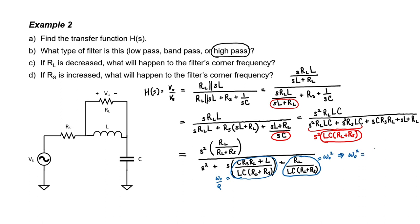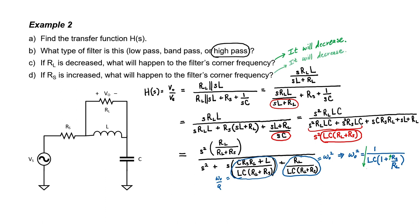Let me rewrite the equation for omega-0 squared by dividing everything by R_L so that R_L appears only once. That way, when we look at question C, if R_L is decreased, the expression R_S over R_L is going to increase, and if the denominator increases, omega-0 goes down. For question D, if R_S is increased, the denominator gets larger and the expression as a whole is reduced — it has the same effect on the corner frequency.